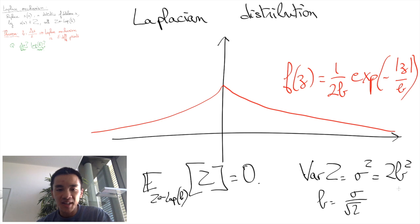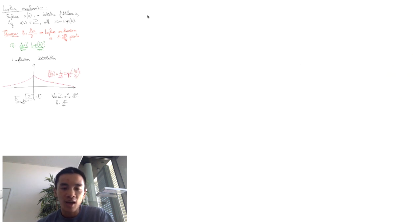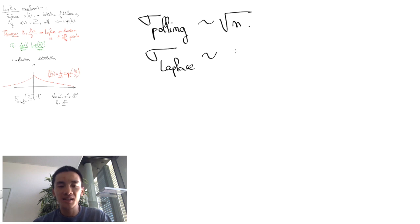This means in particular that if your statistics is, say, the number of people who answered yes to a query in the database, and if the people in the database is a random sample of the population, then we know that the error due to polling is going to be of the order of square root of n, where n is the number of people who answered yes. This means that we would not really decrease the reliability of the poll by adding a noise that is of the order of square root of n, which means that we can take B of the order of square root of n without affecting accuracy.